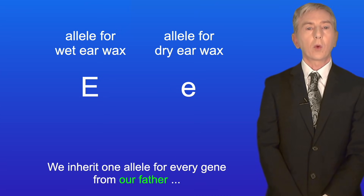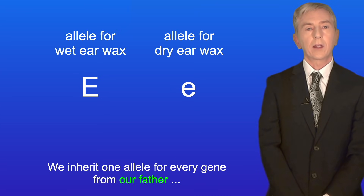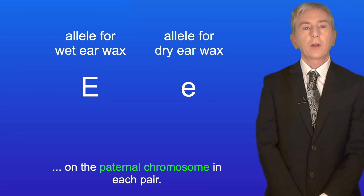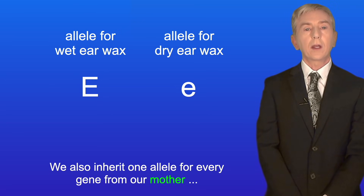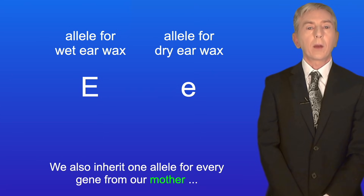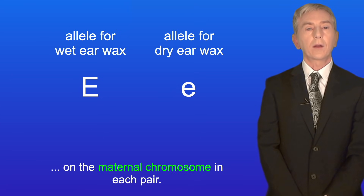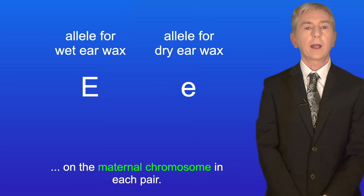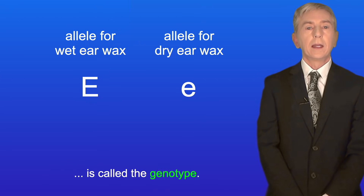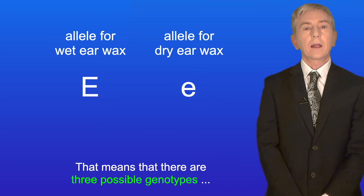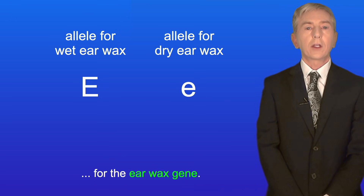We inherit one allele for every gene from our father on the paternal chromosome in each pair, and one allele for every gene from our mother on the maternal chromosome in each pair. The combination of alleles that a person inherits for any characteristic is called the genotype. That means there are three possible genotypes for the earwax gene.